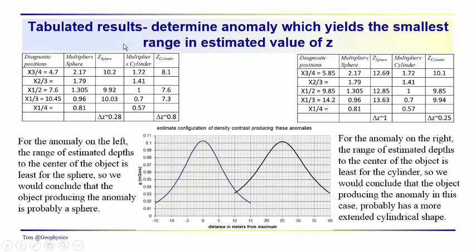So if you did, this is an example of the way you might set it up. I've got the diagnostic positions for the anomaly on the left here. And so we're just measuring off for this anomaly. Whether it's a sphere, whether it's a cylinder, the diagnostic positions are not going to change. This is just the distance from the peak out to a point where the anomaly falls off to three-quarters of its maximum value, one-half, and one-third of its maximum value. And I haven't written in the diagnostic positions for two-thirds of mine. I'm just taking my own advice here and just using three diagnostic positions.